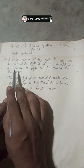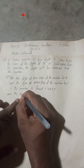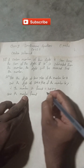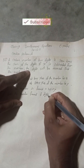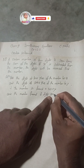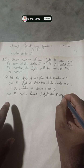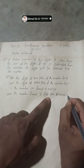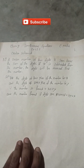Now, if 36 is subtracted from the number, the digits will be reversed. So we need to find the reversed number. If the digits are reversed, then y will be at the tens place and x at the ones place, so the number formed if the digits are reversed will be 10y + x.